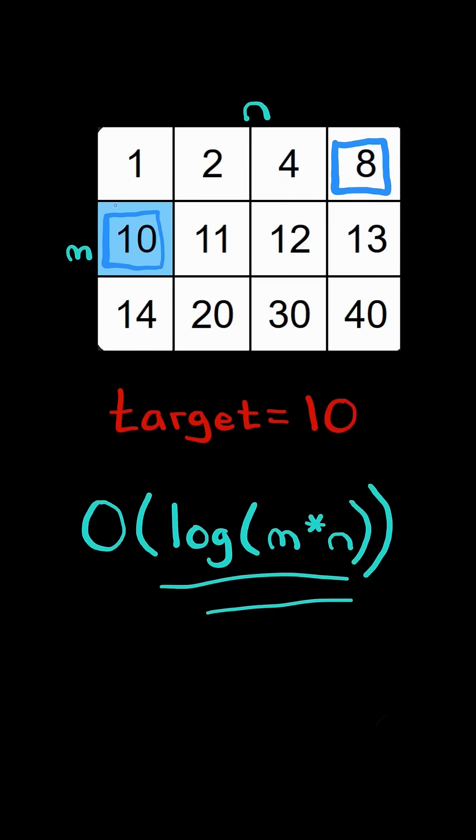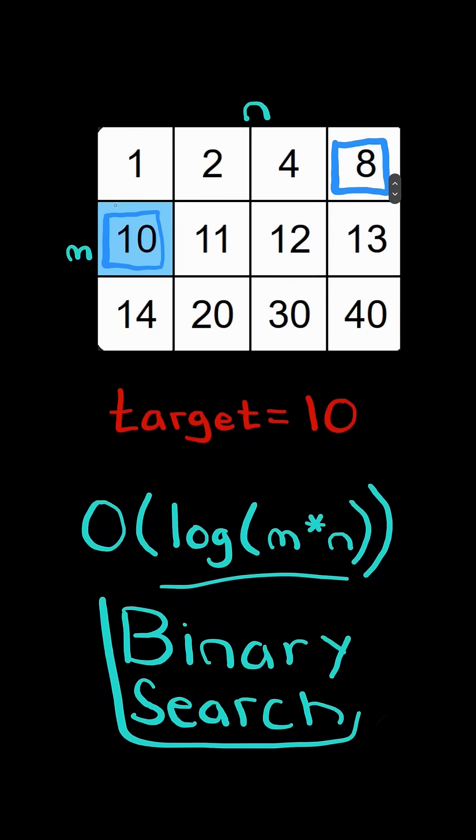Search a 2D matrix. Given an m by n matrix and a target, we want to return true if the target exists in the matrix. Each row in the matrix is sorted in increasing order and each row is a continuation of the next. We will solve this in log m times n time using binary search.